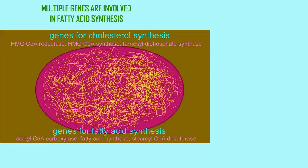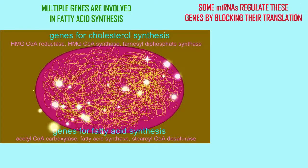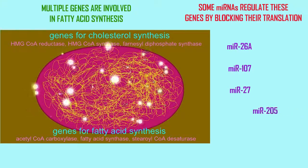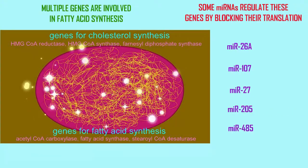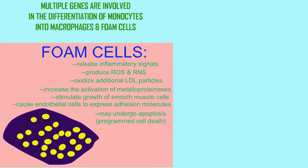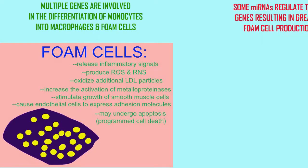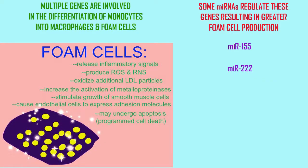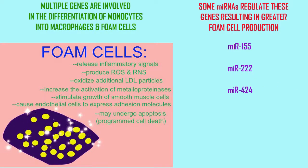There are protein-coding genes involved in monocyte migration and differentiation, or in the inflammation that monocytes may promote, but there are also miRNAs which can regulate these functions.